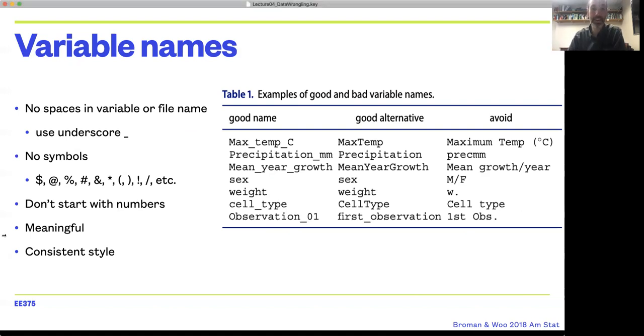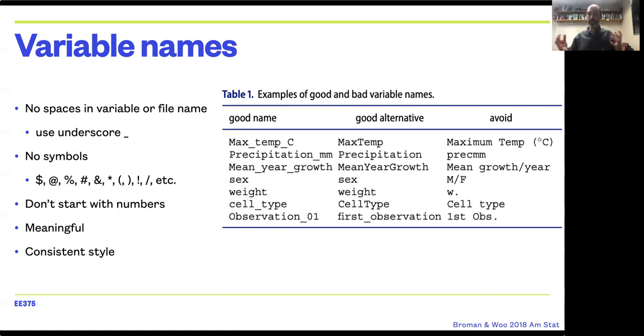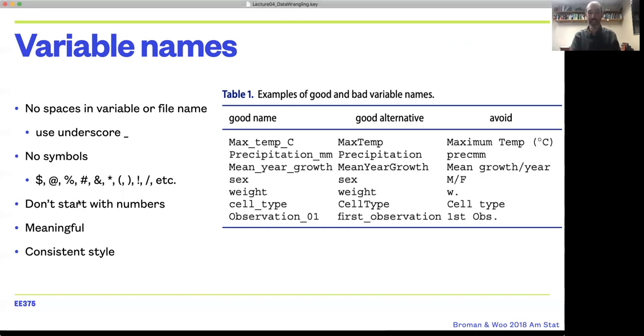On the human-readable side, you want to make sure you're using meaningful variable names—not too short, sufficient information, and a consistent style. If you're always using underscores, use them consistently. Don't use underscores in half your variables and periods in the other half and hyphens in another.